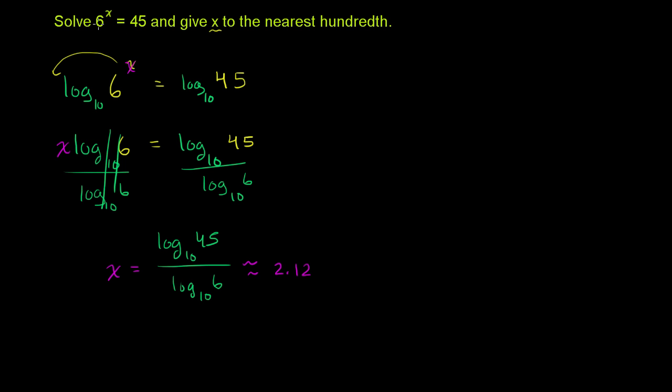Which makes sense, because 6 squared is 36. 45 is a little larger than 36. 6 to the third power is much larger. So you get 2.12.